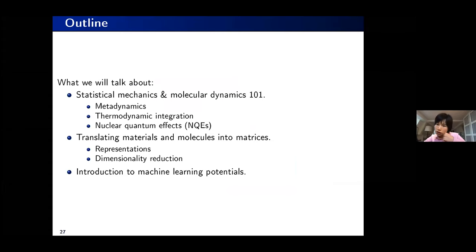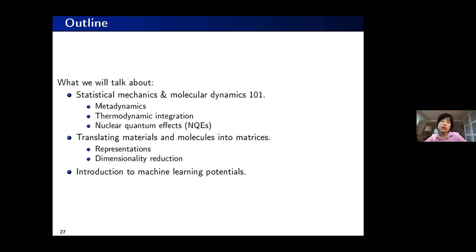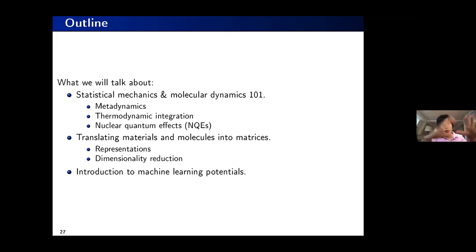We can still use thermodynamic integration to perform a reversible switching between the classical and quantum mechanical system. In practice, this equals an integral that is a function of the quantum mechanical kinetic energy, which we can compute from ring polymer molecular dynamics. So far we have talked about atomistic modeling and statistical mechanics. The next part changes gears to machine learning. Each step means a lot of computation — thermodynamic integration is not cheap, metadynamics is not cheap, and nuclear quantum effects require 20 times more replicas. Here comes the machine learning part and how it can help.